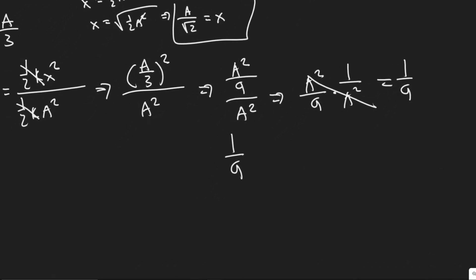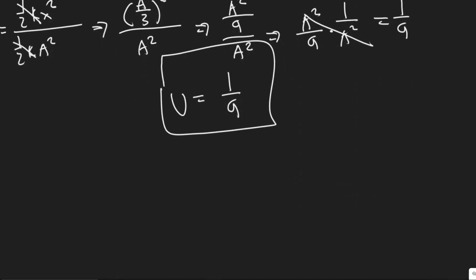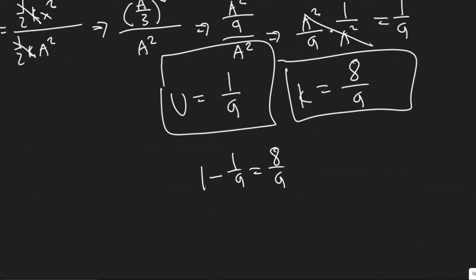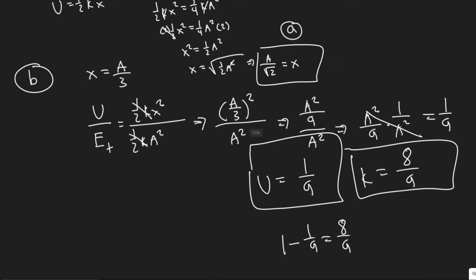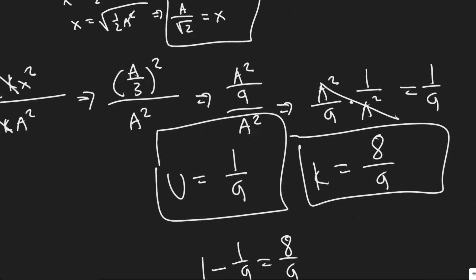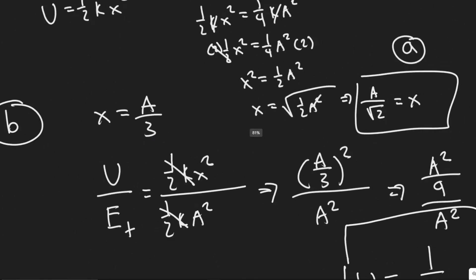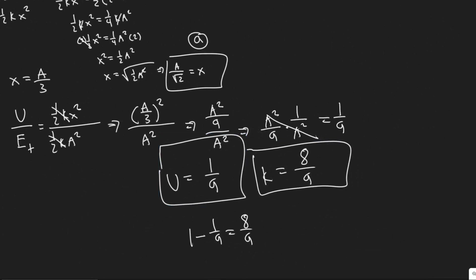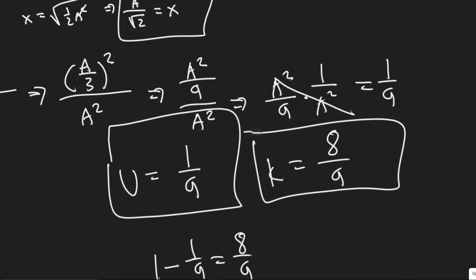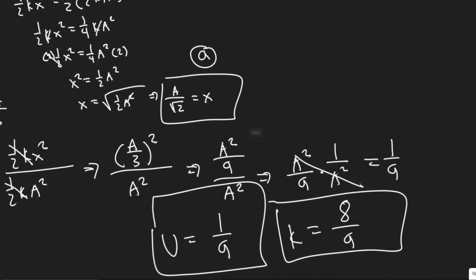So one-ninth is the fraction for potential energy. The kinetic fraction is just one minus one-ninth, which gives eight over nine. So at this point most of the energy is kinetic — eight-ninths kinetic while only one-ninth is potential when x is one-third the amplitude. So one over nine for potential and eight over nine for kinetic are your answers for part B.